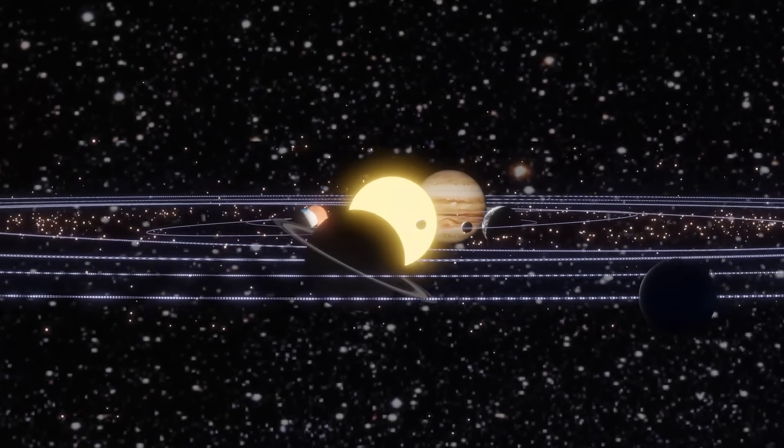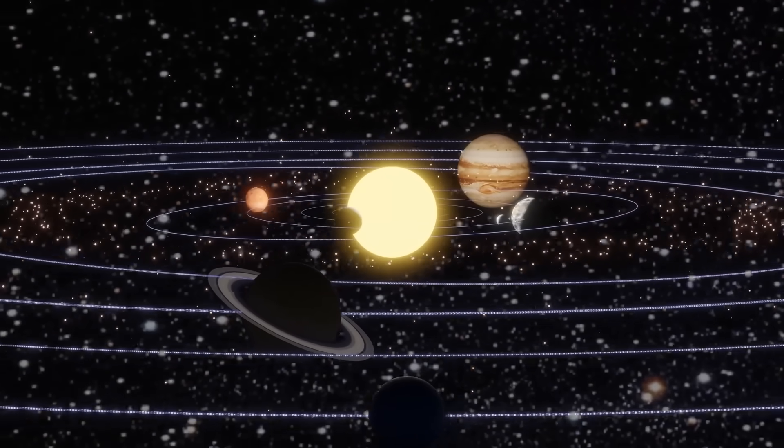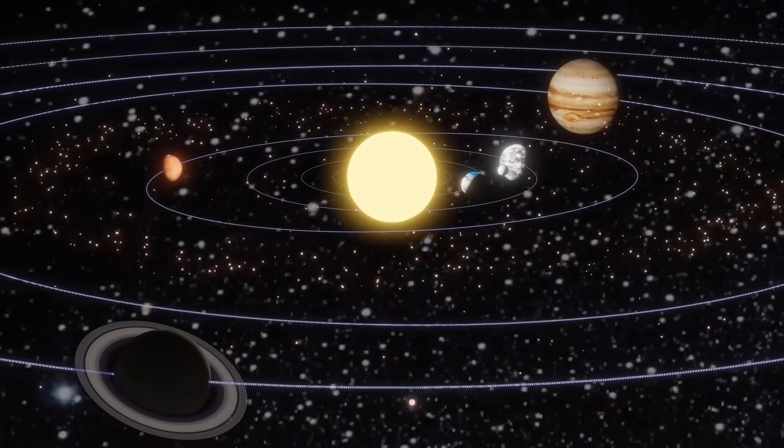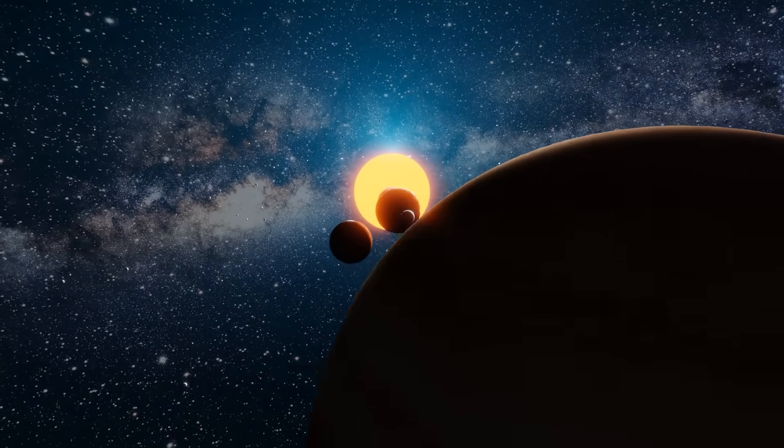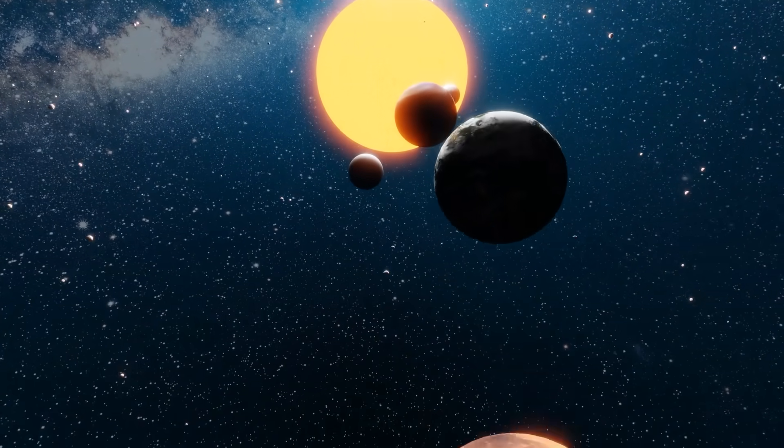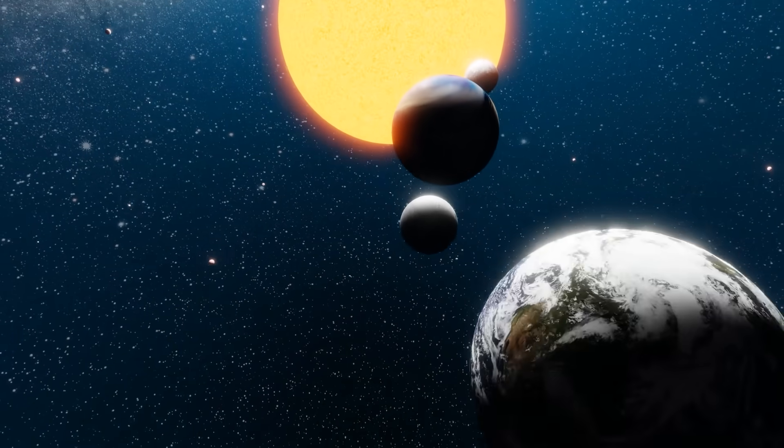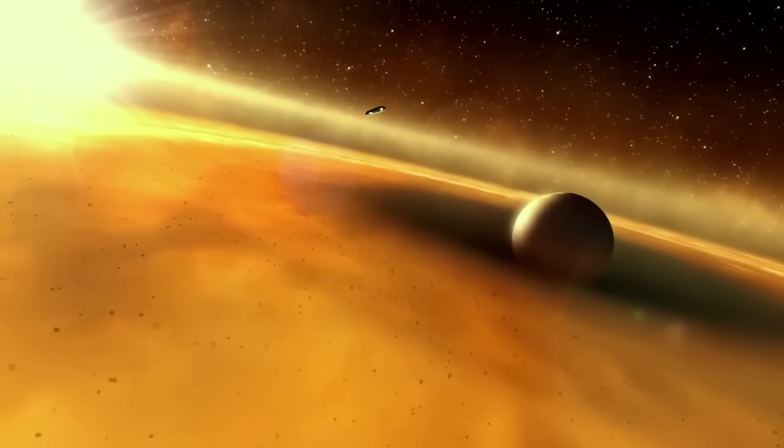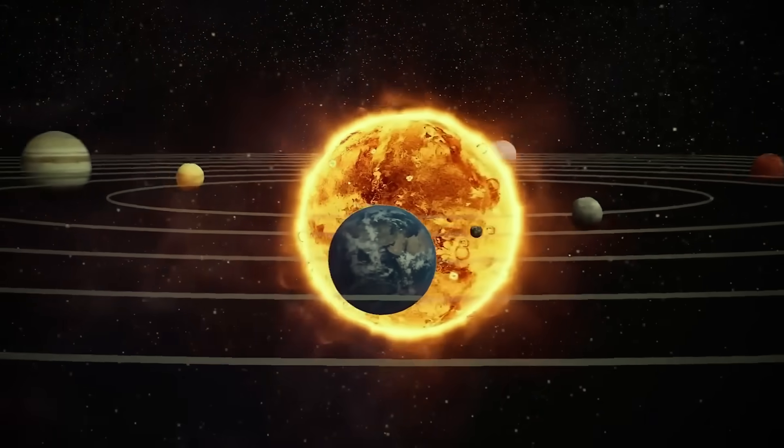And that blueprint, when rendered in three-dimensional mapping, corresponded almost perfectly to the orbital architecture of our own solar system. Each hexagon represented an orbital resonance point, a harmonic alignment between planets, with one glaring difference. At the center wasn't the sun. It was empty. A void, precisely positioned where 3I Atlas now drifted.